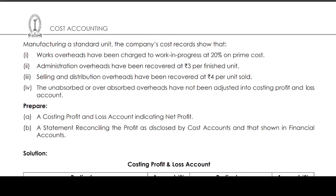The company's cost records show that Works Overhead have been charged to Work in Progress at 20% on prime cost. Administration Overheads have been recovered at 3 rupees per finished unit. Selling and Distribution Overhead have been recovered at 4 rupees per unit. Unabsorbed or overabsorbed overheads have been adjusted into the Costing Profit and Loss Account. Prepare a Costing Profit and Loss Account indicating net profit and a statement reconciling the profit disclosed by cost accounts and that shown in financial accounts.